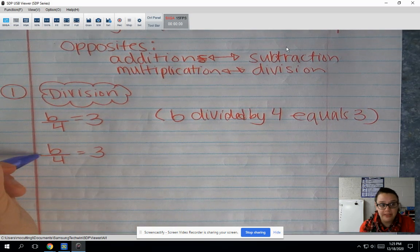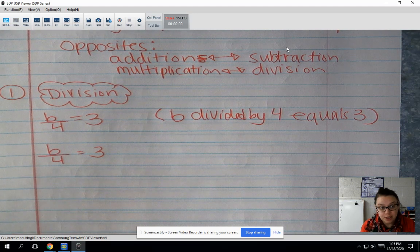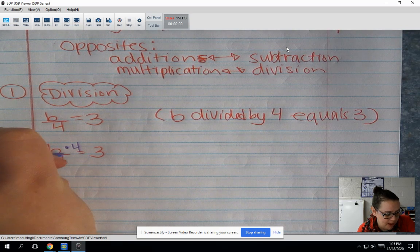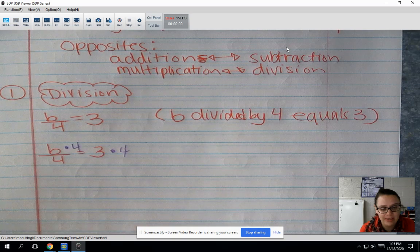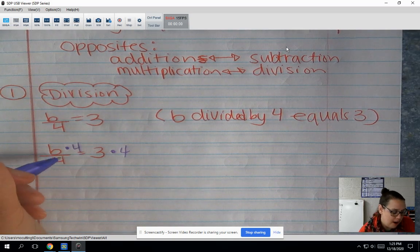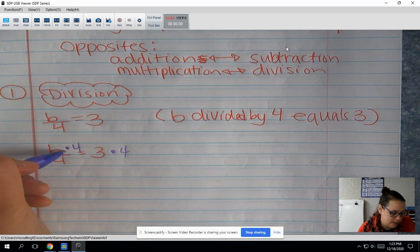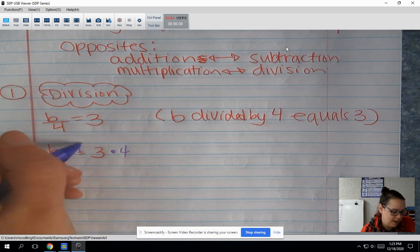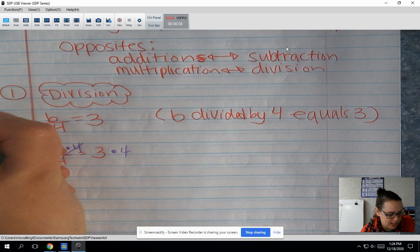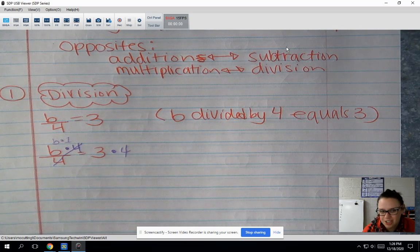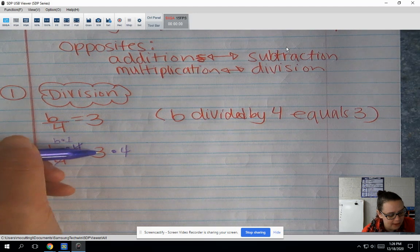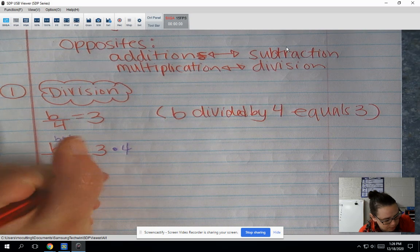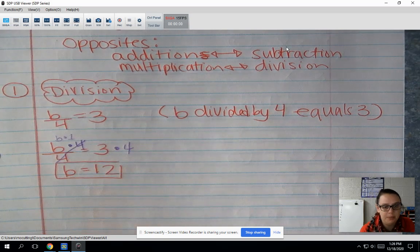So they took mystery number B, they divided it by 4 and got 3. So we're going to undo that division by multiplying by 4. So we're going to go times 4 on this side of my equal sign and times 4 on this side of my equal sign. So if I multiply something by 4 and then divide it by 4, that whole any number divided by itself gives me one thing comes back into play. So this just gives me B times 1, which is just going to be B. And then on this side, I have 3 times 4, which is going to be 12. So that's my answer, B equals 12.